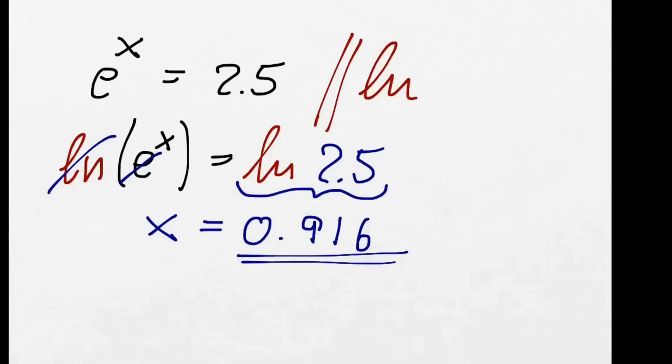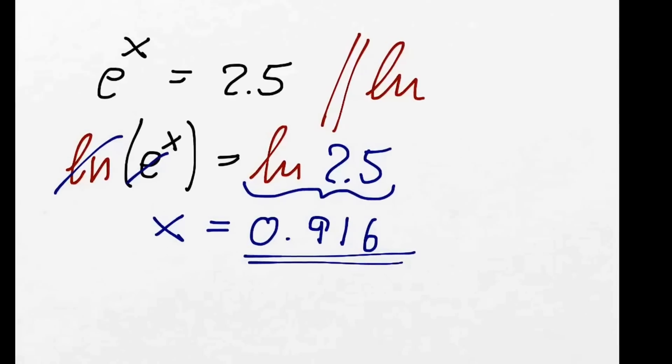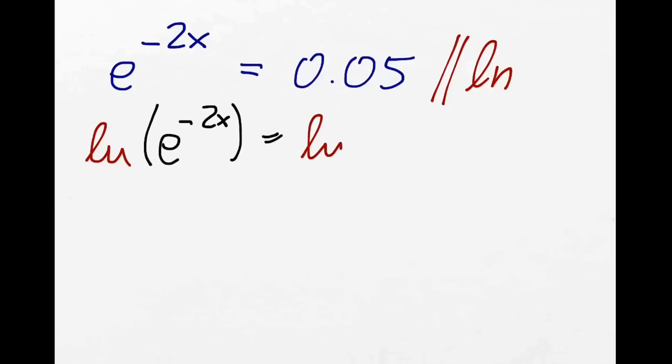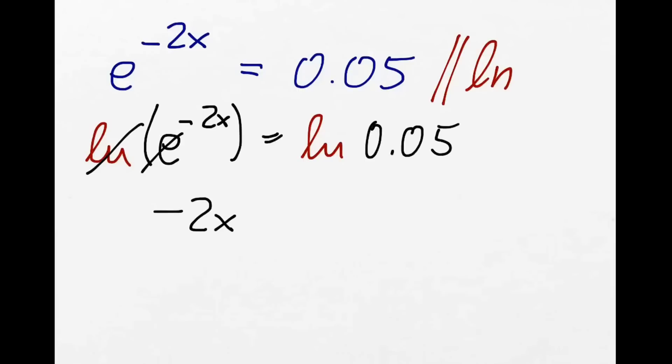Here is another one, just a little bit for practice. We have e to the power of minus 2x equals 0.5. The first action point is to get rid of the e. We take both sides ln: ln(e^(-2x)) equals ln(0.05). ln and e cancel out, and now we've got minus 2x on the left-hand side. The calculator gives us roughly minus 3.